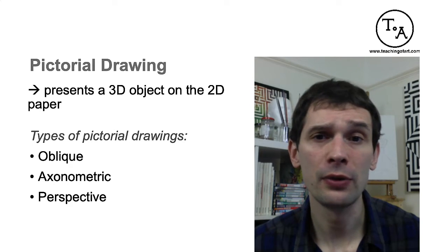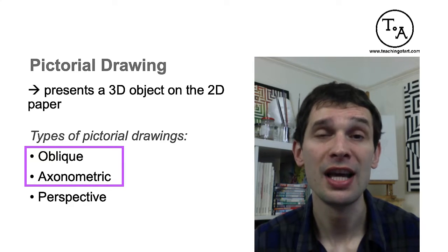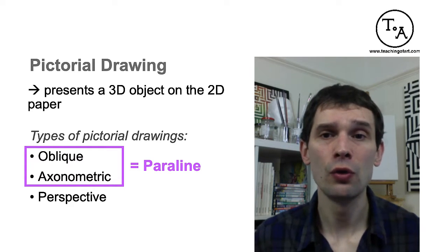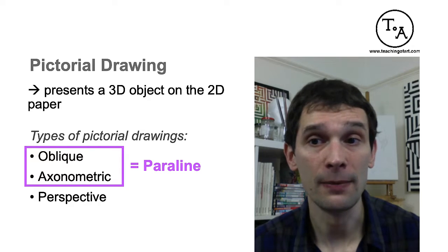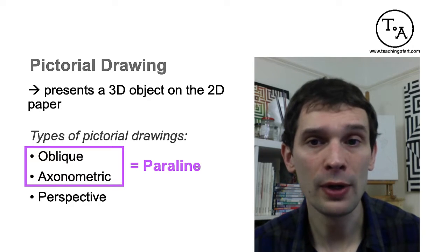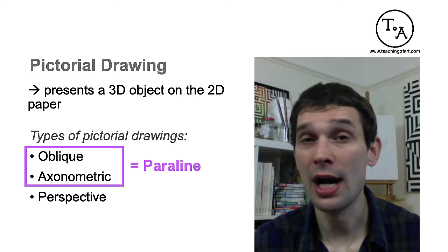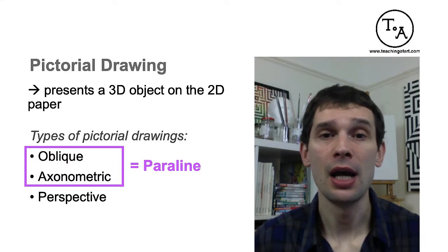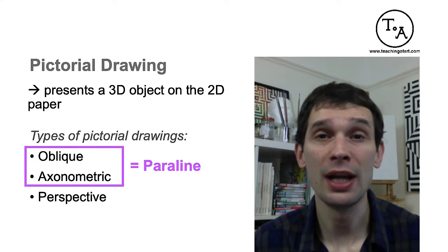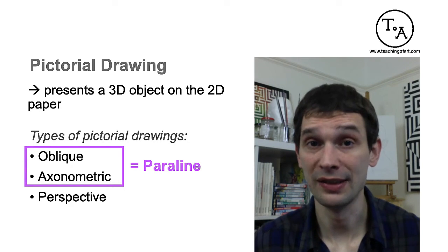We have three types of pictorial drawings. The first two — oblique and axonometric projections — are also known as parallel projections, because when you draw them, the edges of the object are parallel. As a result, you can feel that there is depth in your drawing, but it is not displayed in the way your eyes would normally perceive it. Basically, these objects don't look photorealistic — they don't look like actual photos. Parallel drawings are non-perspective projections. The third type of pictorial drawing is perspective drawing.